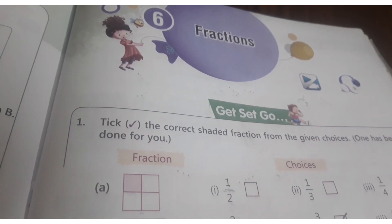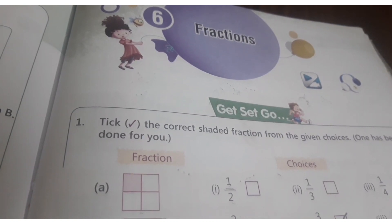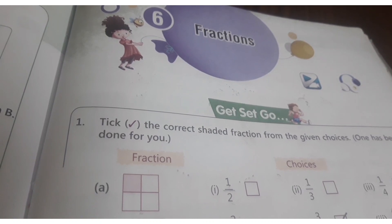So here square is divided into 1, 2, 3, 4, 5, 6, 7, 8 parts. Out of 8 parts, 1, 2, 3, 3 parts are colored in green.